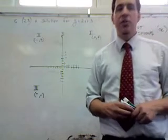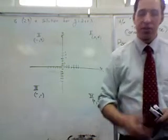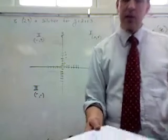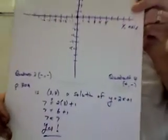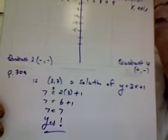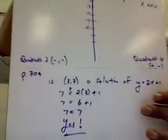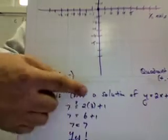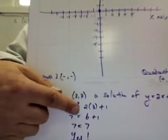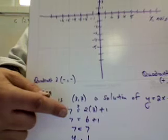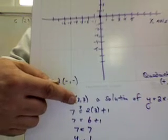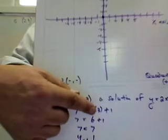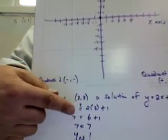The first part of this is finding out whether certain points that are given are solutions or not. The first one in the book is, is 3,7 a solution for y equals 2x plus 1? So what we do is we write 7, question mark, equals, does 7 equal 2 times 3 plus 1? Where did we get the 3 and where did we get the 7? We got them from the point given. We substitute 3 for the x value and 7 for the y value.